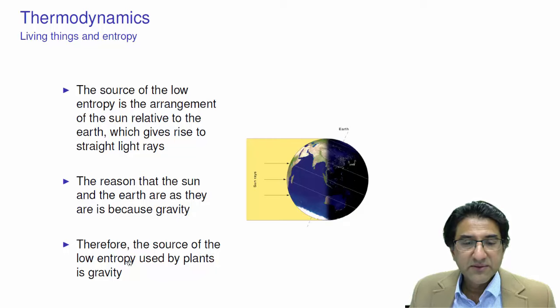Therefore, the source of the low-entropy, that's the low-entropy sun rays used by the plants, is gravity.